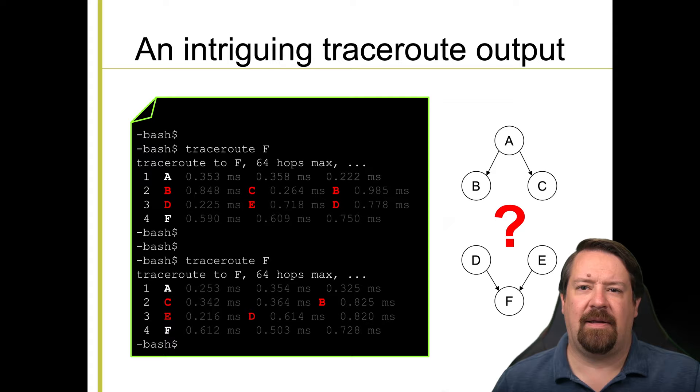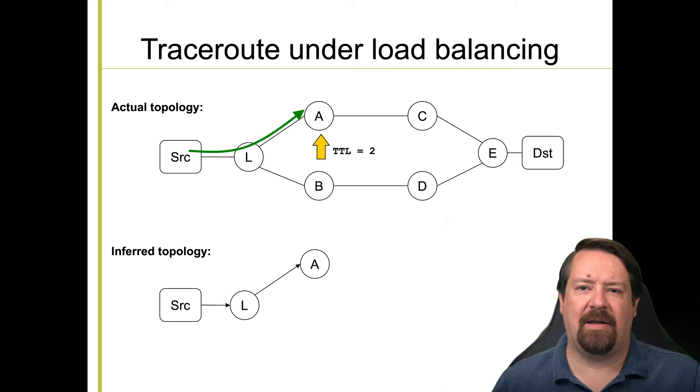At router A, traffic is being load balanced across two different paths, and then it is being aggregated at router F. So here we have our actual uninferred topologies. The load balancing that happens at L sends our TTL2 packet to A, but then load balances our TTL3 packet onto the other path, and it arrives at D. If we just send one probe at each TTL, we would have no idea this is happening, and we've just inferred an incorrect link between A and D that doesn't exist in the real topology.